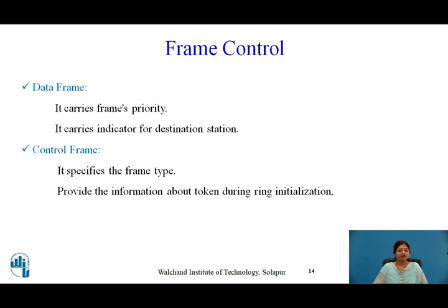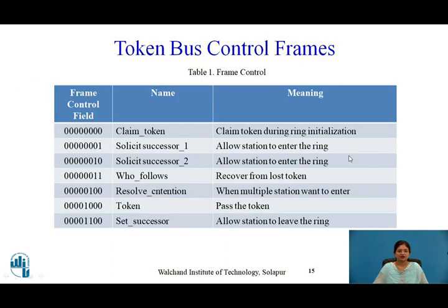The data frame carries the frame priority and an indicator for the destination station, so the destination station sends an acknowledgement back to the source station to confirm whether the frame was transmitted properly. The frame control field specifies the frame type and provides information about the token during ring initialization, including control messages like claim token, solicit successor 1 and 2, who follows, resolve contention, token, and set successor — giving information about which stations can be included or removed from the ring.